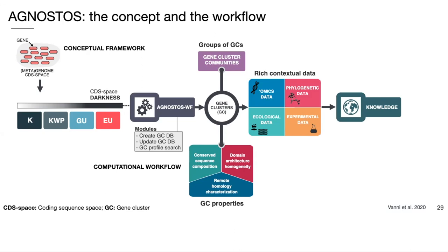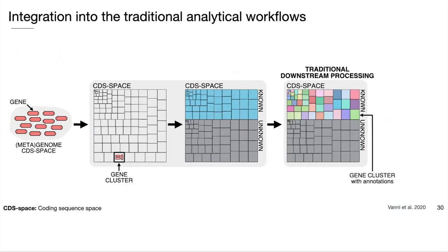We also performed taxonomic annotation and searched additional databases of protein structural data such as the Dark Proteome Database, and experimental data such as the dataset of mutant phenotypes from Price and colleagues, 2018. All these features combined in Agnostos allow us to integrate it transparently into traditional analytical workflows, enabling the inclusion of the unknown fraction in the downstream functional analysis of genomes and metagenomes.